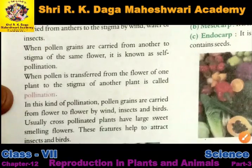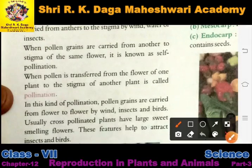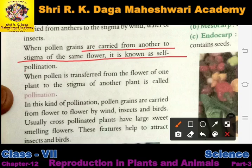When pollen grains are carried from the anther to the stigma of the same flower, it is known as self-pollination.